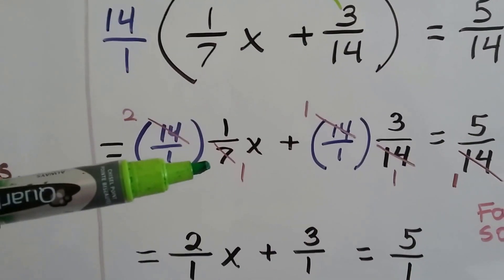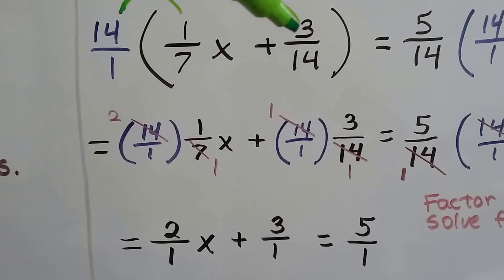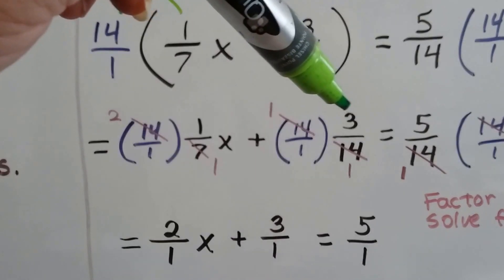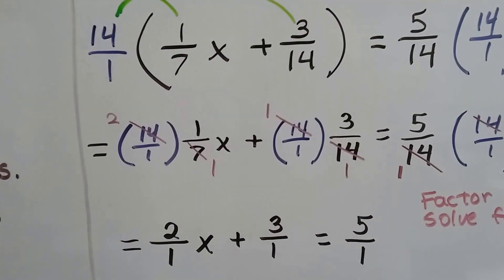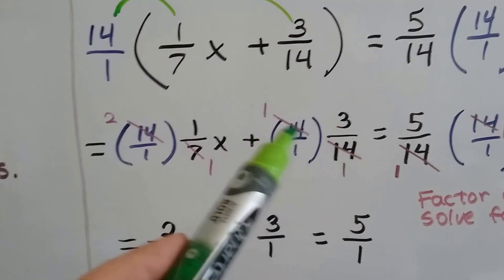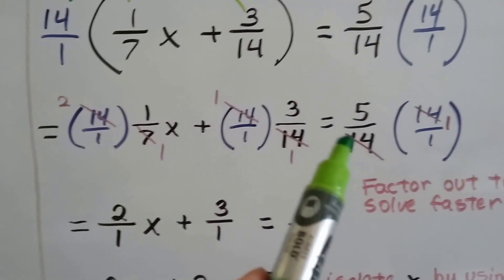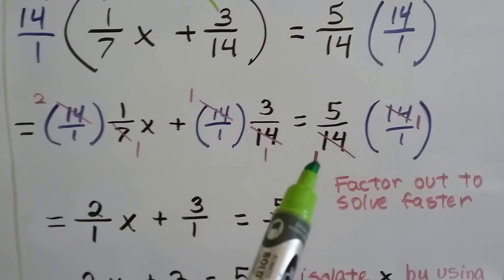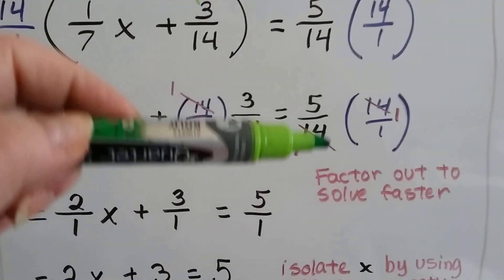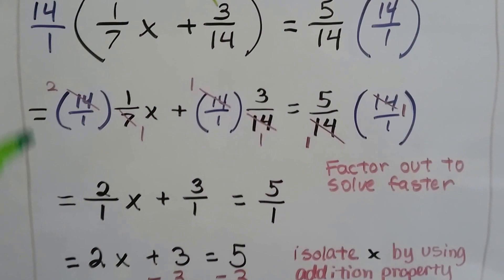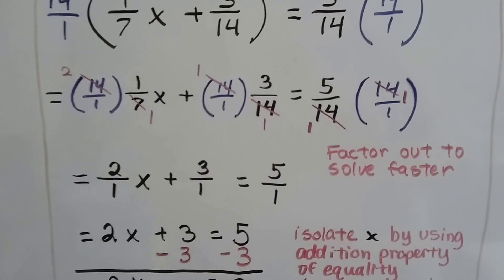If we do it to this one, we've got 14 times 3 over 1 times 14. This 14 and that 14 can cancel out, factor out as 1s. So we got 1 times 3 over 1. And this one, this 14 cancels out that 14, so we end up with 5 times 1 over 1. It's a lot easier than doing 5 times 14 and 3 times 14. We just factor them out and go quicker.